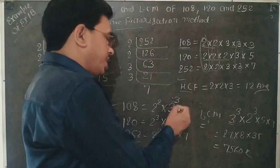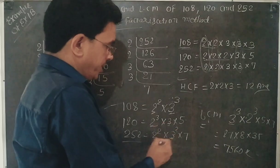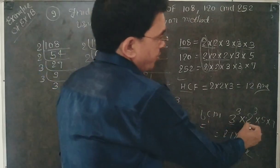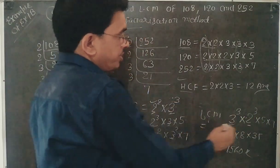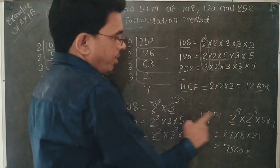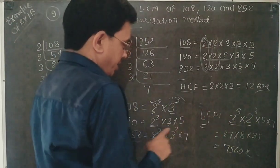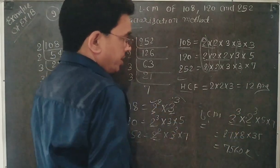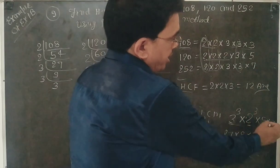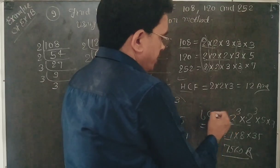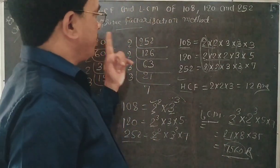So we write 2³. Since 5 appears only once, we write 5. Since 7 appears only once, we write 7. All numbers are accounted for in the LCM. Now multiply: 3³ = 27, 2³ = 8, and 5 × 7 = 35. Multiplying: 27 × 8 × 35 gives 7560. This is the LCM — the least common multiple of 108, 120, and 252.